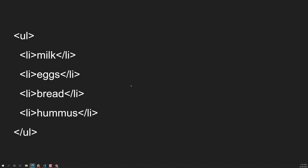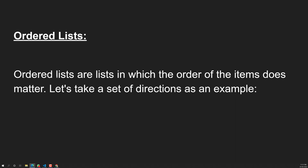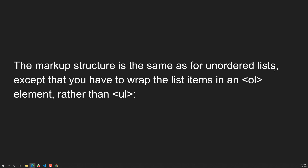Now let's look at the ordered list. We use an ordered list when the order of items matters — for example, a set of directions to a particular person. You need to follow a particular order: go straight, turn left, go straight 300 meters, then you'll find the destination. The markup structure is the same as the unordered list, but instead of using a UL element, we use an OL element to wrap the list items.